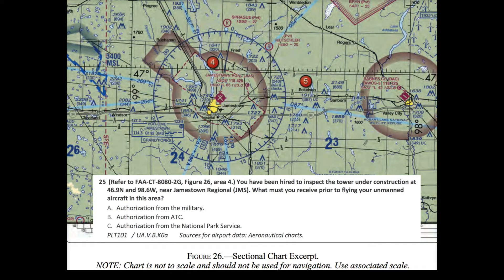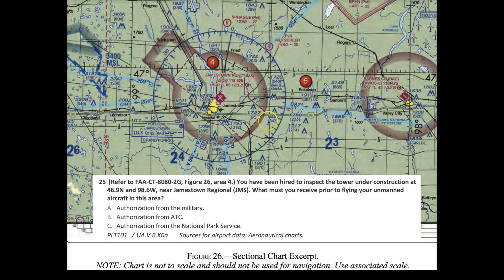Question 25 is a tricky one testing a couple of things. We go to Figure 26, area 4. The question is: you've been hired to inspect a tower under construction at 46.9 north and 98.6 west, near Jamestown Regional. What must you receive prior to flying your unmanned aircraft in this area? If you remember from our sectionals instructional video, a tower under construction is marked with UC. They're also using decimal degrees — 46.9 and 98.6 — instead of the degrees-minutes-seconds format we're used to.